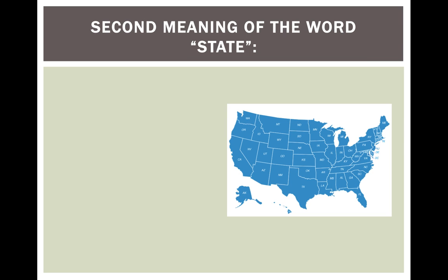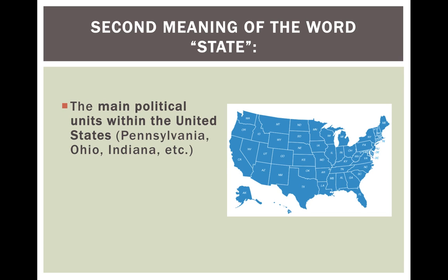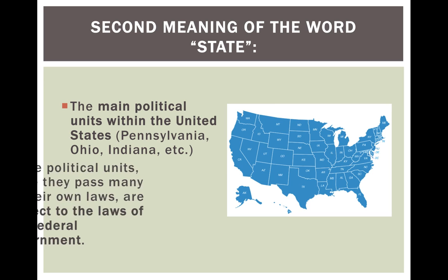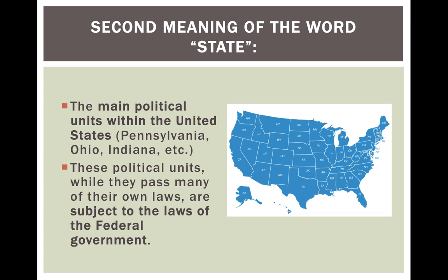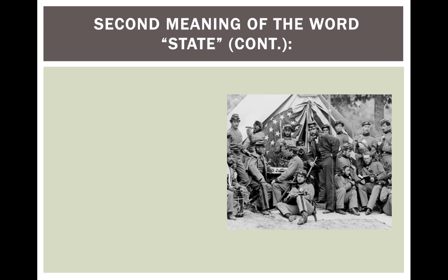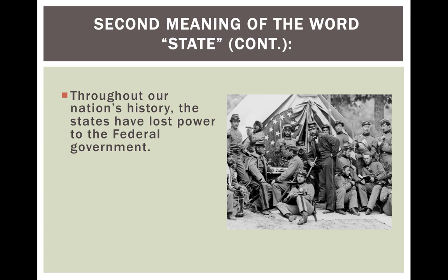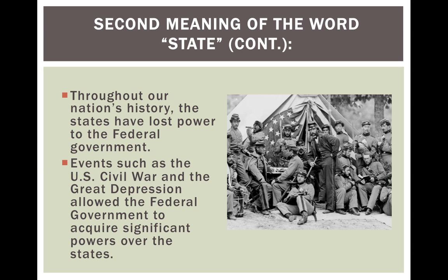The second meaning of the word state refers to the main political units within the United States, such as Pennsylvania, Ohio, and Indiana. These political units, while they pass many of their own laws, are subject to the laws of the federal government. Throughout our nation's history, the states have lost power to the federal government. Events such as the Civil War and the Great Depression allowed the federal government to acquire significant powers over the states.